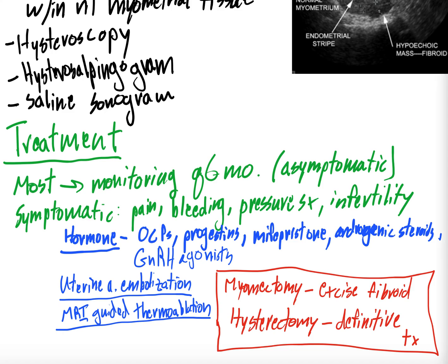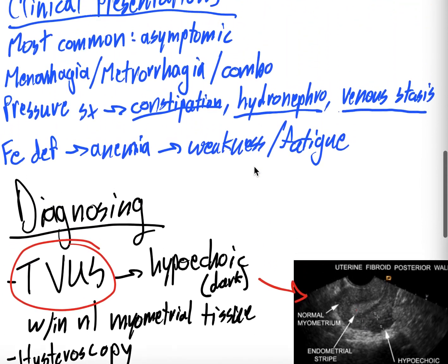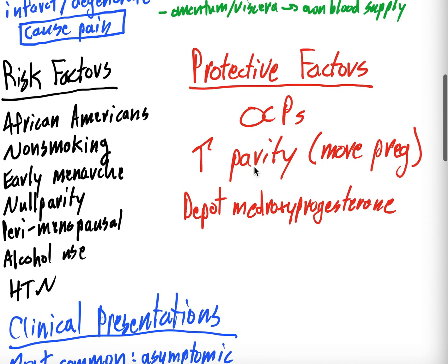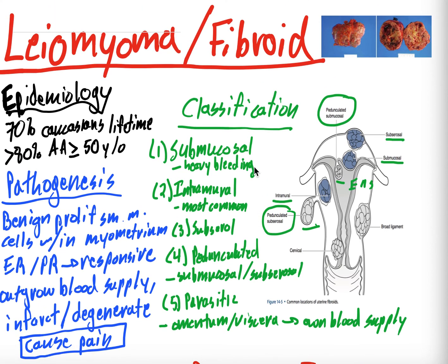So that is leiomyomas, or fibroids. We covered epidemiology, pathogenesis, classifications, risk and protective factors, clinical presentations, diagnosis — primarily transvaginal ultrasound — and treatment. Thank you for viewing, I appreciate your time. Leave your comments, questions, and concerns below. Subscribe and hit the bell, and have a good afternoon or whatever time it is for you all.